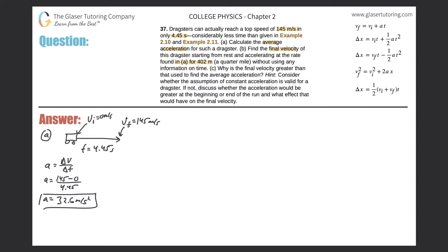For Part B, the dragster travels a total distance — or more precisely, a displacement — of 402 meters. It starts from rest, so the initial velocity is still zero. The problem says to find the final velocity without using any information based on time, so we'll use the acceleration value of 32.6 m/s² from Part A.